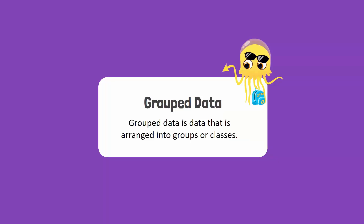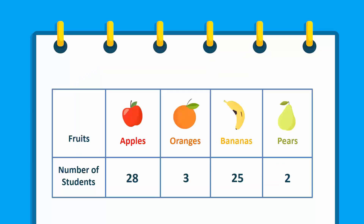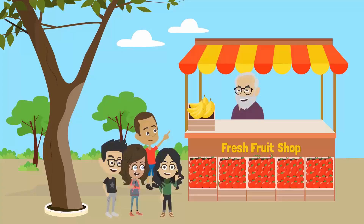Do you see this table? We just grouped our data. Grouped data is data that has been arranged into groups or classes. Grouped data makes it much easier to make sense of our data. This grouped data helps us to know the number of students who like each type of fruit. Now Dadajaan knows that he will keep apples and bananas in his fruit shop, but not oranges and pears, because not enough students like them.